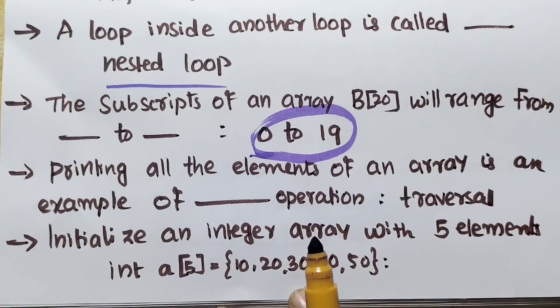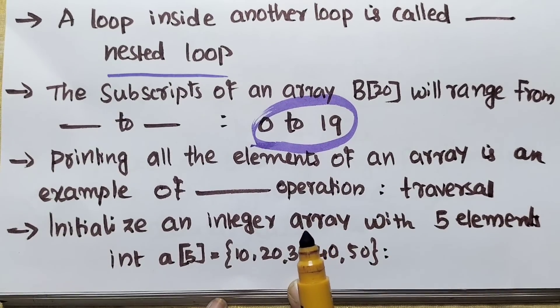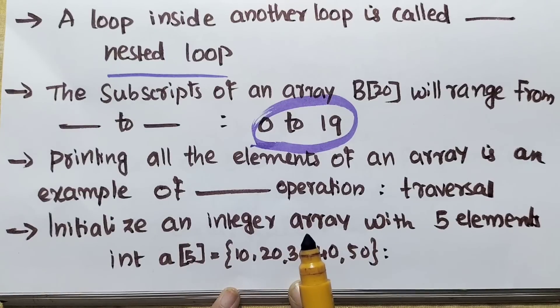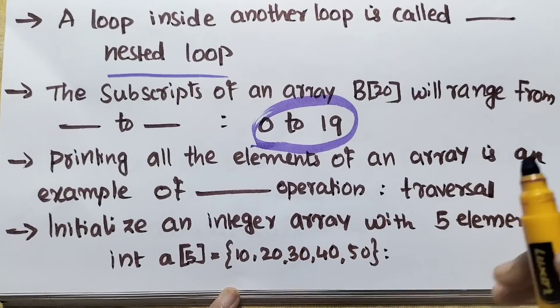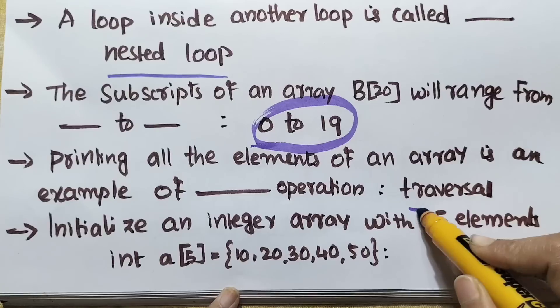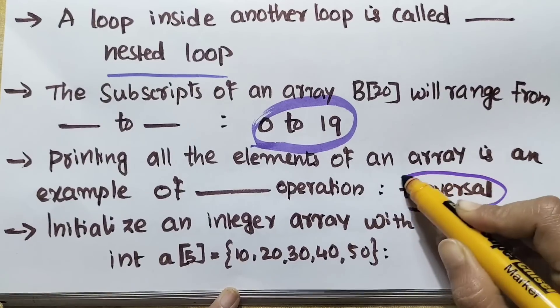Printing all the elements of an array is an example of a traversal operation.